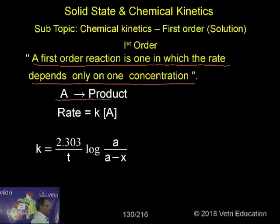So A is giving product. According to law of mass action, rate is directly proportional to the concentration term. That is equal to k[A], where k is a rate constant and A is a concentration term.